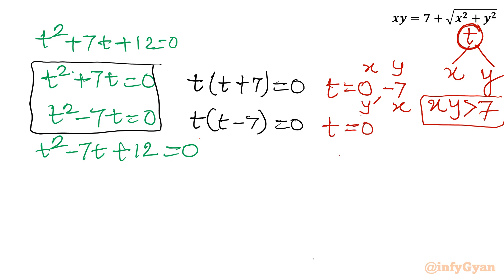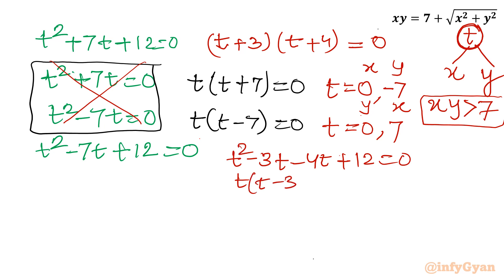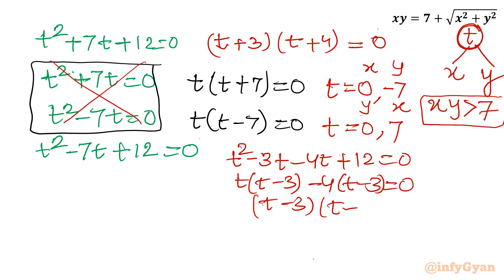Only cases 1 and 4 remain. From case 1: t² + 7t + 12 = 0 factors as (t + 3)(t + 4) = 0, giving t = −3 and t = −4. From case 4: t² − 7t + 12 = 0 factors as (t − 3)(t − 4) = 0, giving t = 3 and t = 4.